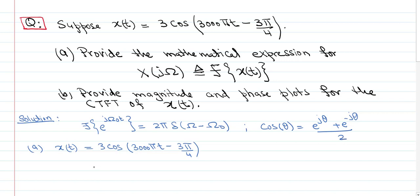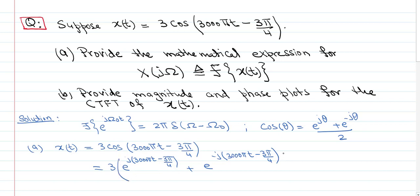Using that, we write x(t) as 3 times [e^(j(3000πt − 3π/4)) + e^(−j(3000πt − 3π/4))] divided by 2. This is our Euler's identity expansion.